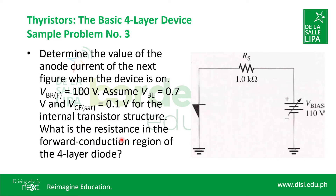For sample problem number three, given this circuit, determine the value of the anode current when the device is on. The V_BRF, or forward blocking region voltage, is equal to 100V. Assume V_BE of 0.7V and V_CE saturated at 0.1V for the internal transistor structure. Also determine the resistance in the forward conduction region of the four-layer diode.